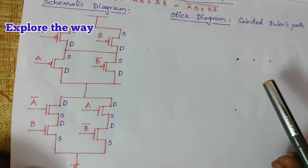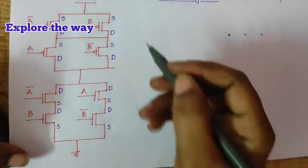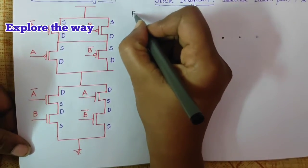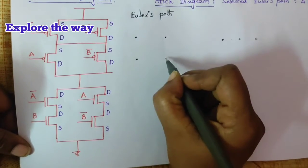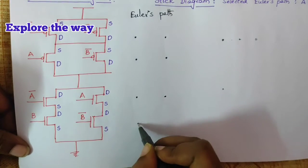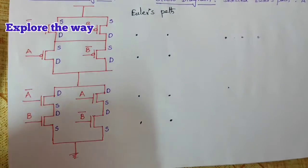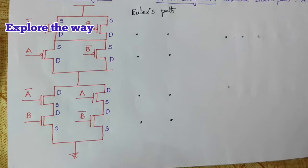This is the schematic diagram. Draw a Euler's path. Place all the 4 nodes. Find out an uninterrupted path. You can start from any node.